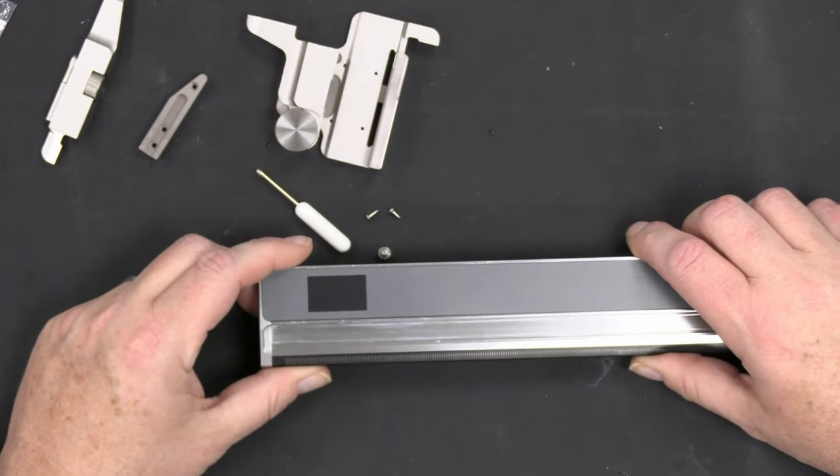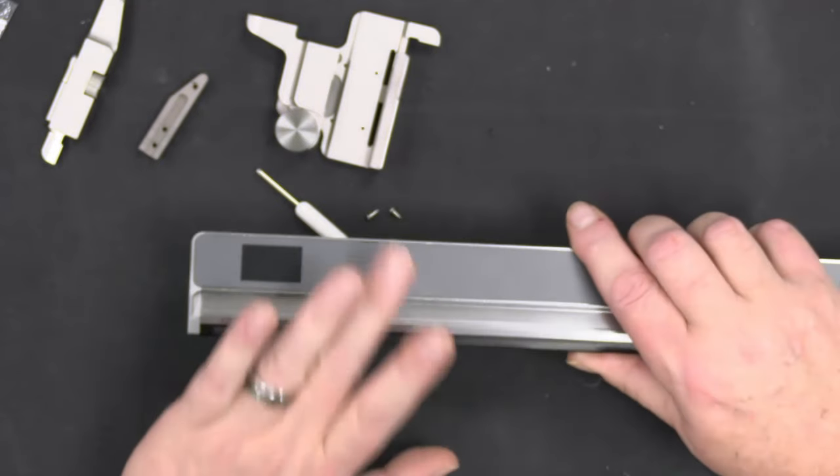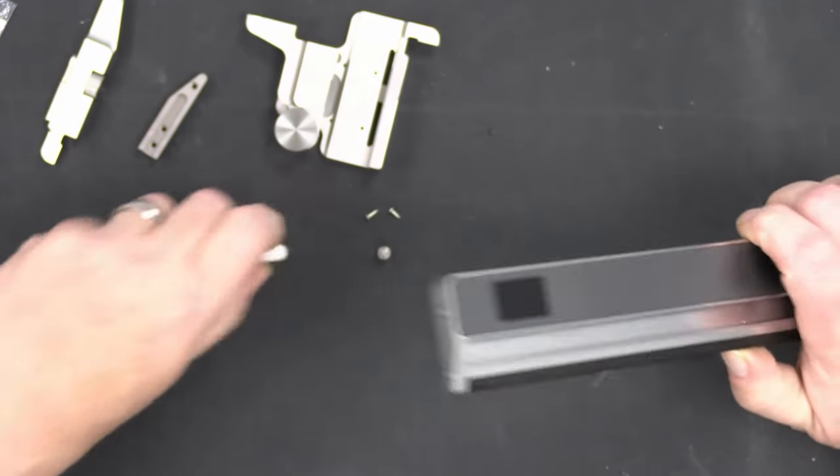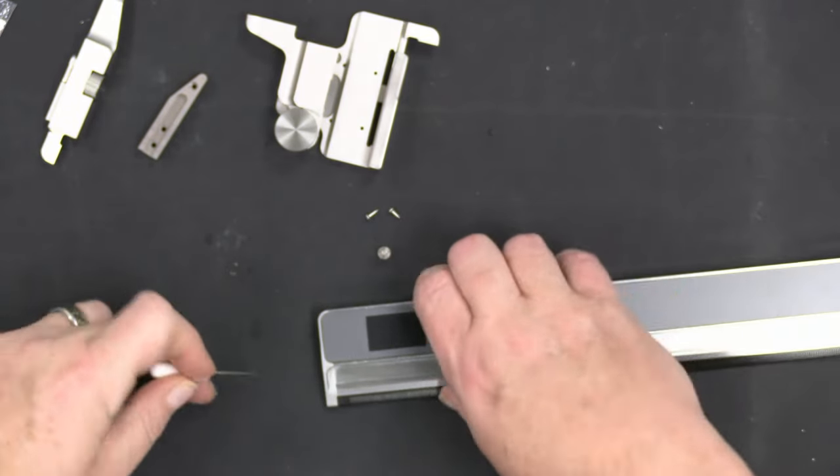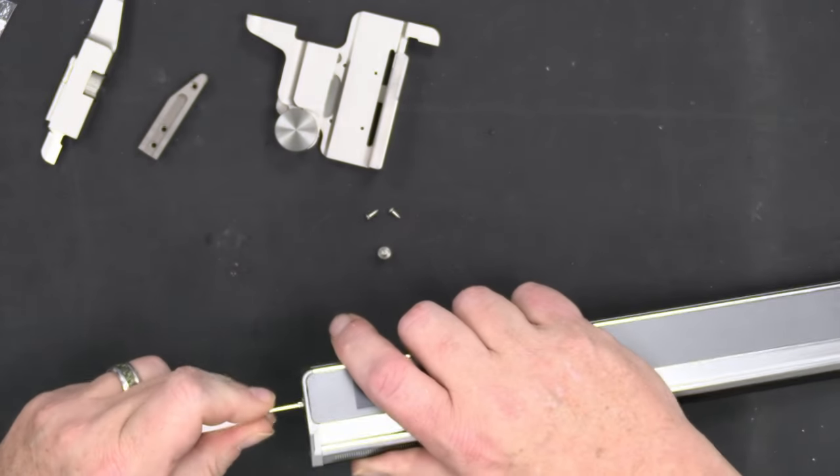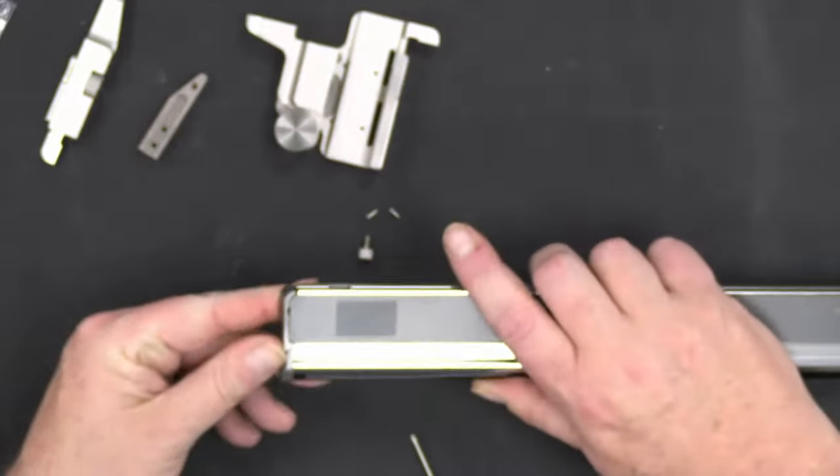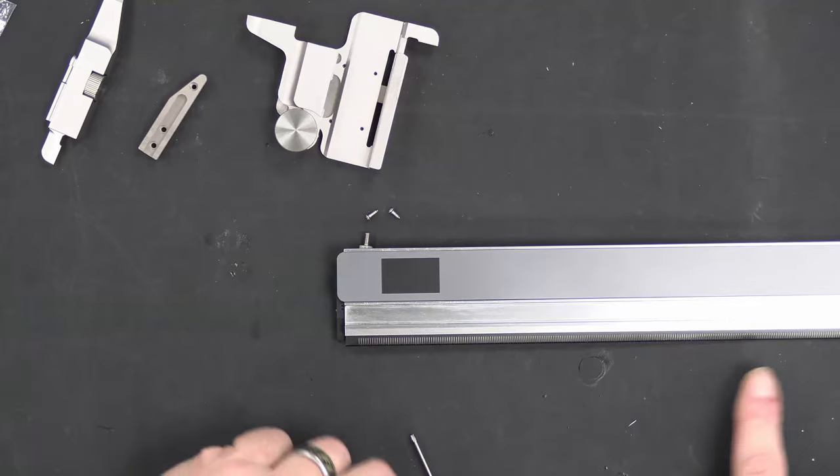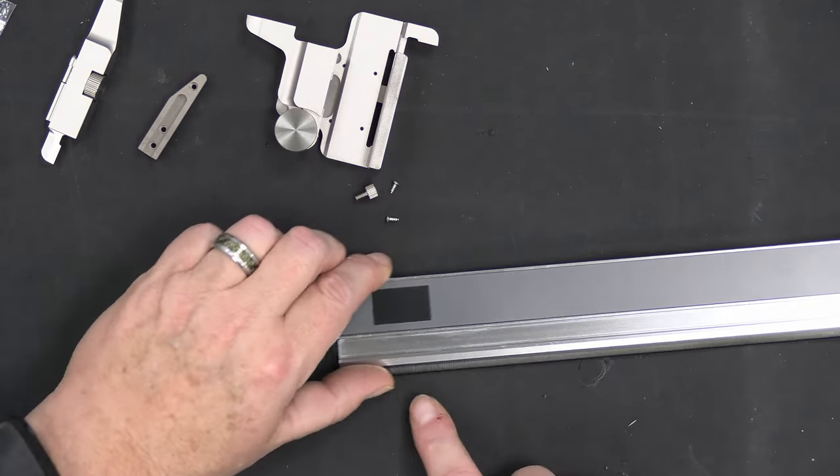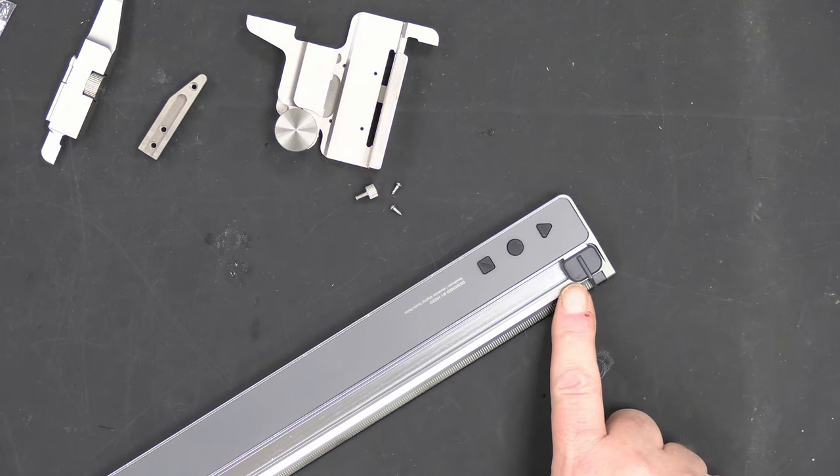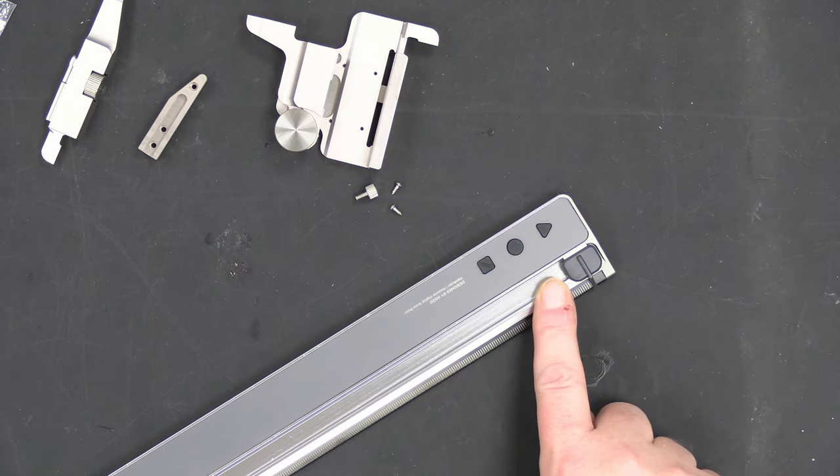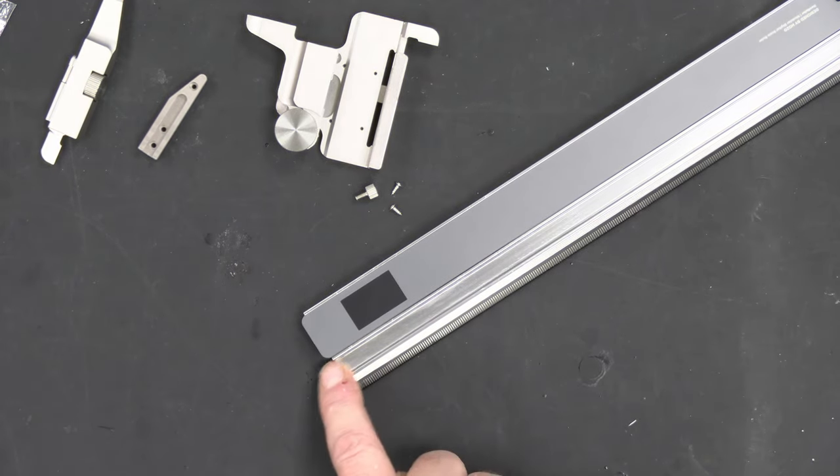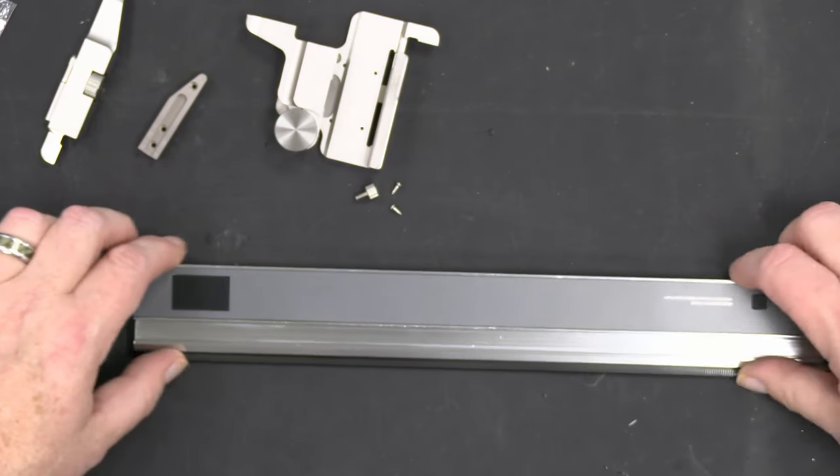They even give you some extra screws to do the conversion and a little tiny star screwdriver here. To start the conversion process, the first thing I do is you've got to take the end piece here off, which is why they give you the little screwdriver. Once the screw is out, you take the end cap off. Now it's very important that when you're doing this, I have the slider all the way over here because you do not want to make sure that comes out, or else you'll never get it back in. And if you do, the calibration will be off.